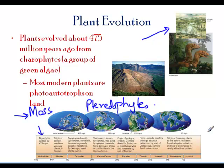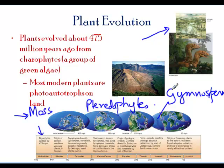Then came the next generation of plants, which were the seedless vascular plants, and then came the vascular plants — the gymnosperms. Gymnosperms are conifers and are more dominant in certain areas such as higher altitudes.